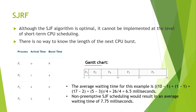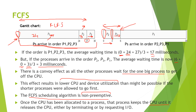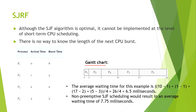Let's look at the Gantt chart for this example. At instant 0, only process 1 is available because it arrived at time 0, so it is allocated resources. At 1 second, process 2 arrives. Process 1 will already have executed for 1 second, so its remaining time is 7 seconds. Now comparing, process 2 is having the lowest burst time of 4 milliseconds, so it will be scheduled next.